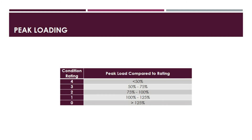The second category is peak loading with respect to the nameplate transformer rating. A rating of 4 is given for peak load less than 50% of its rating. A rating of 3 is given for peak load more than 50% and up to 75% of its rating. A rating of 2 is given for peak load between 75% to 100%. A rating of 1 is for peak load more than 100% but less than 125%. And if the peak load is greater than 125%, we assign a rating of 0.